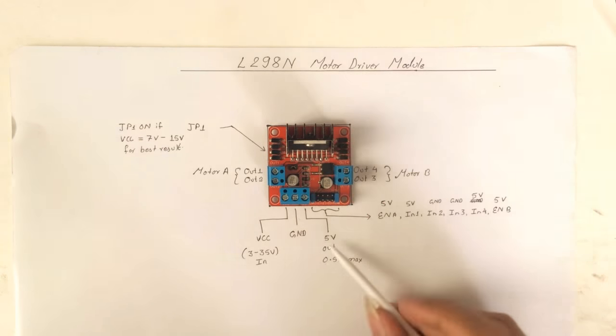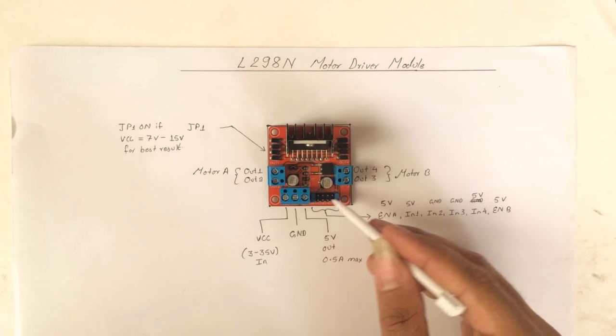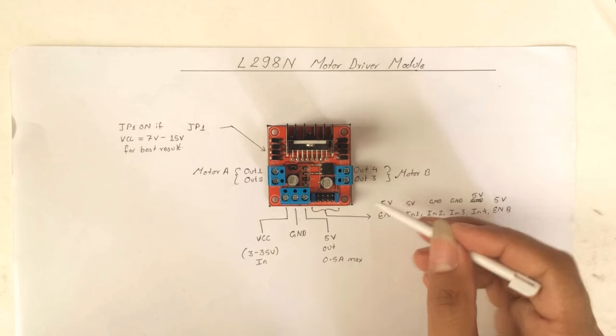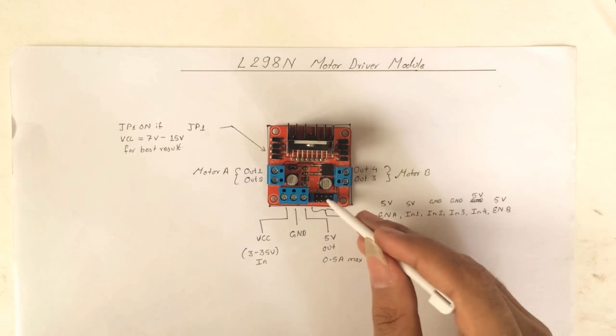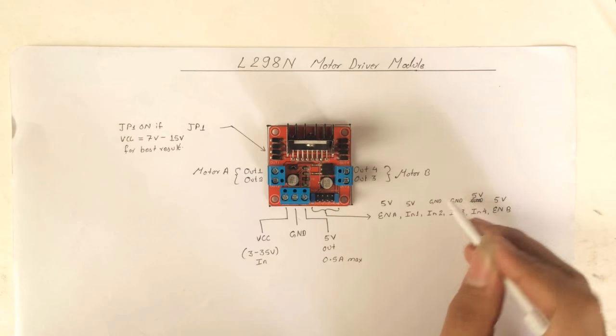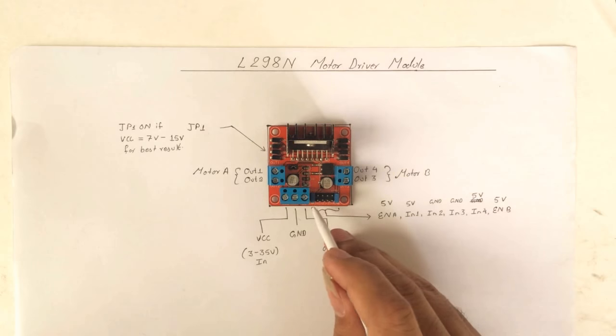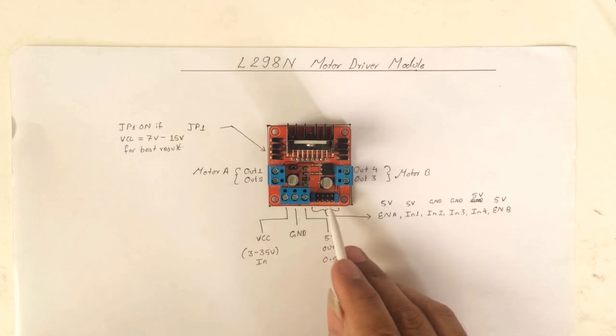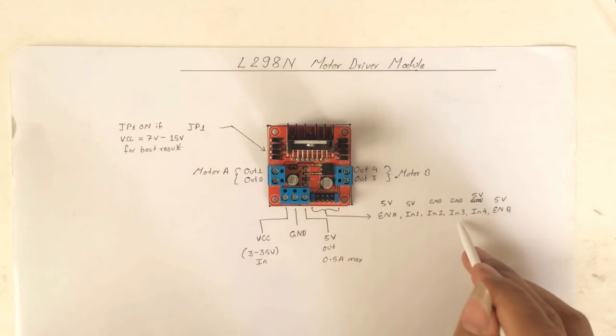Here we have our signal connectors. We have two rows here, 1 2 3 4 5 6 in each row. The first connector is 5 volt, the second one is 5 volt, the center two are ground, and the rightmost two are again 5 volt. The bottom one is enable to Motor A and the last one is enable to Motor B. The center four are IN1, IN2 for motor forward and reverse.